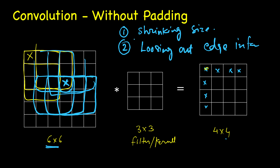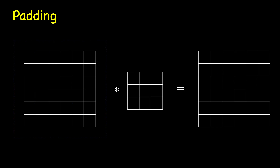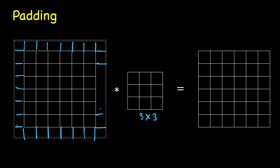These are the two drawbacks. To overcome them, we pad the input image with some pixels depending on the filter size. Let's say we have extended it - the original image was 6x6, the filter is still 3x3, and we have padded one pixel on each side. There are multiple ways to pad: you can copy from adjacent pixels, or you can pad with zeros, which is the most common convention.